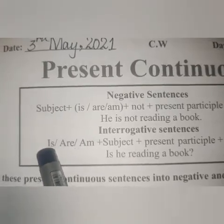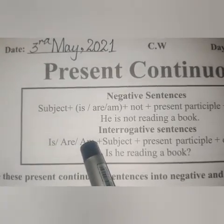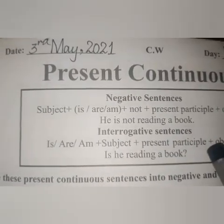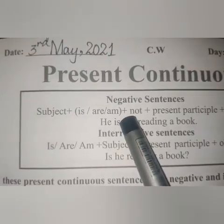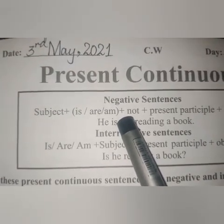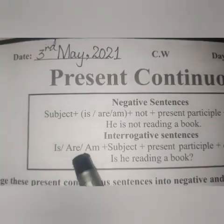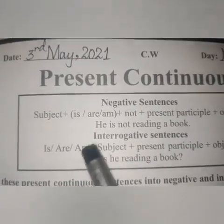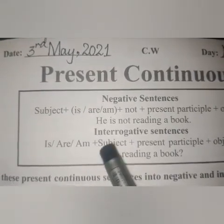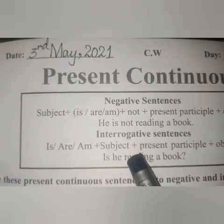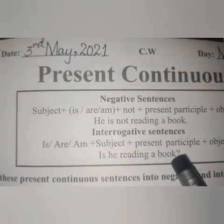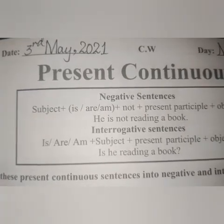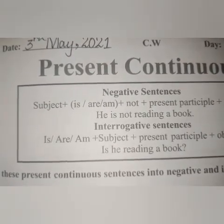When we make an interrogative sentence, the helping verb comes at the start of the sentence, then subject, then ING form of verb, and object at the end. For example: 'He is reading a book.' If we make it interrogative, we write: 'Is he reading a book?' — meaning 'Kia woh ek kitab par raha hai?' Is is his helping verb, and it always comes at the start. At the end, we put a question mark.